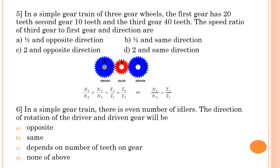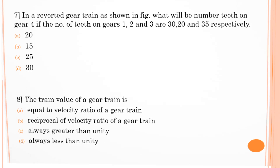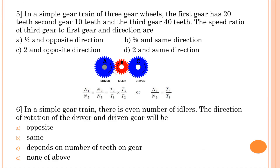Sixth question: in a simple gear train there is an even number of idler gears — the direction of rotation of driver and driven will be? For odd number of idlers the direction was same; for even number of idlers it will be opposite. The answer is opposite.